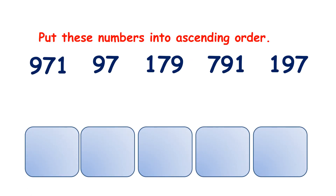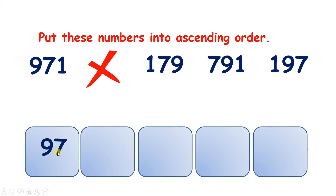Now pause the video and see if you can put these numbers into ascending order, so from smallest to largest. We only have one number which is under one hundred, so ninety-seven is the smallest number. Now we have four three-digit numbers, so we can start by comparing the number of hundreds. We have nine, one, seven, and one.